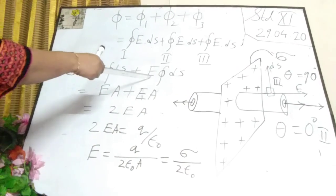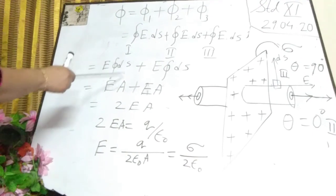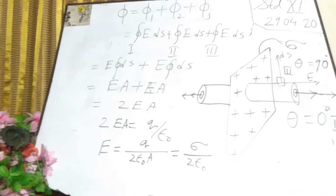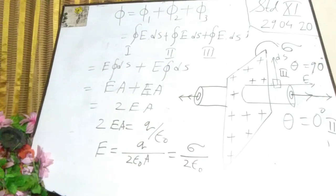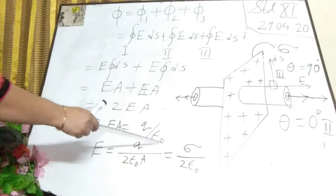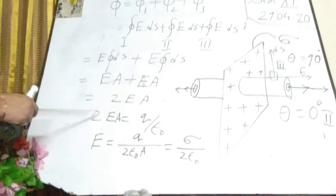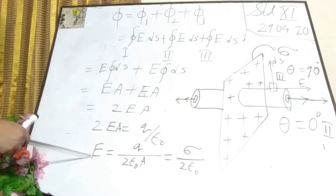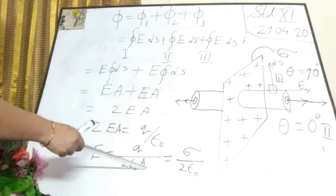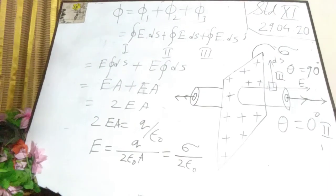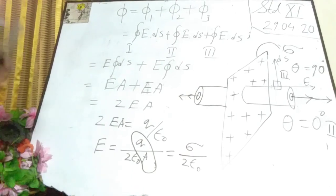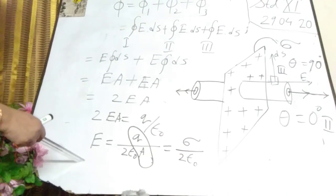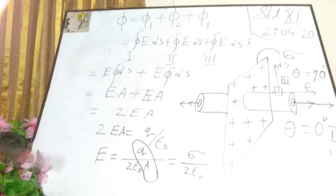From Gauss's law, phi equals Q divided by epsilon-0. So in place of phi I write Q over epsilon-0, and I already have the flux as 2EA. Therefore, 2EA equals Q over epsilon-0, which gives E equals Q over 2 epsilon-0 A. In place of Q over A, I can write sigma — the charge density, charge per unit area. So the final equation is E equals sigma over 2 epsilon-0.